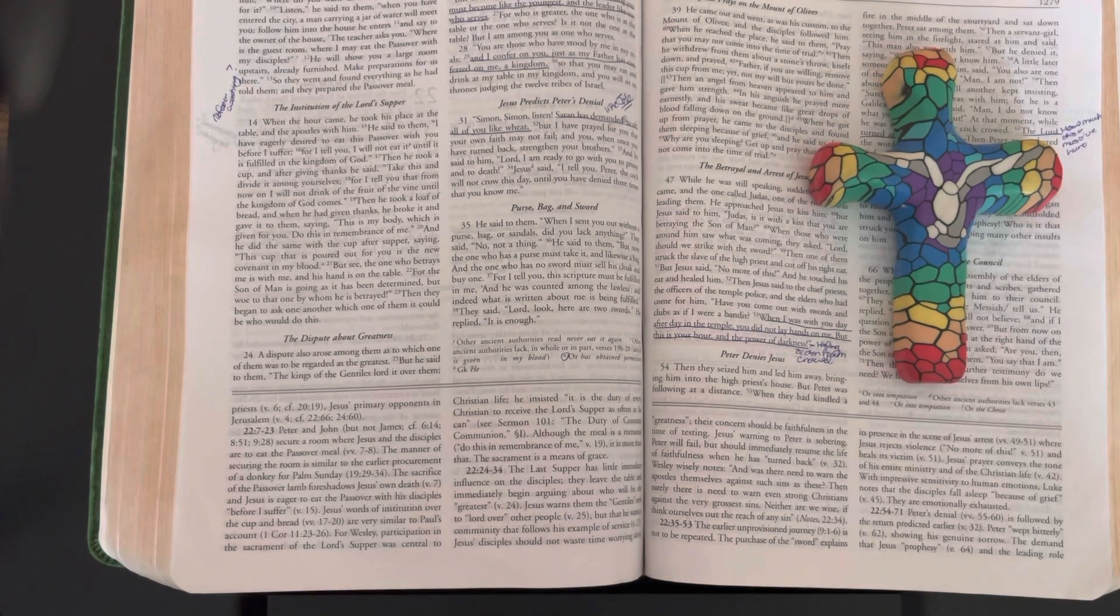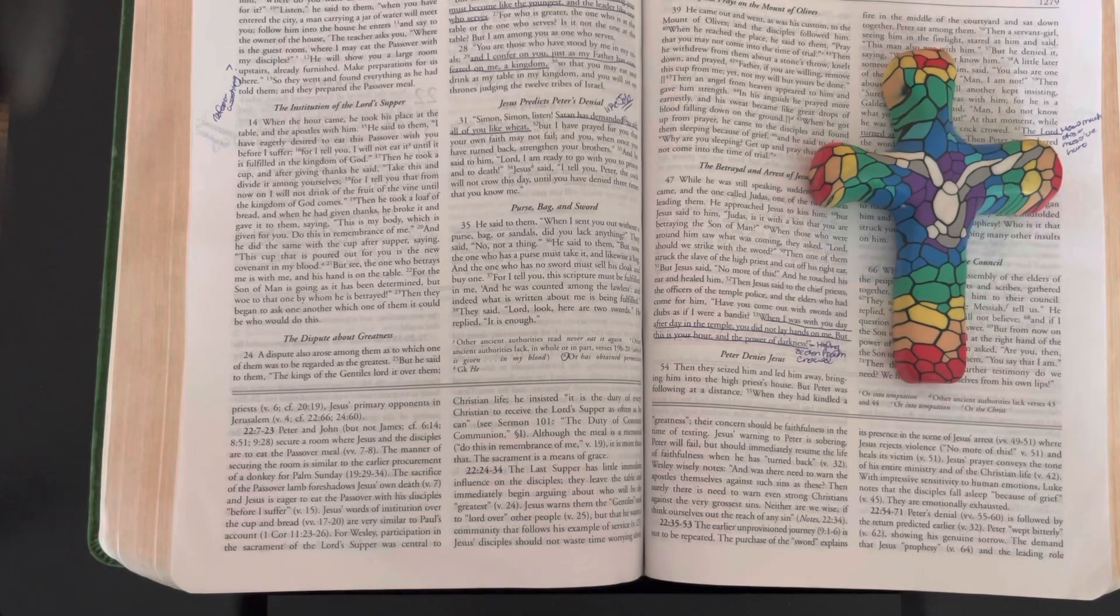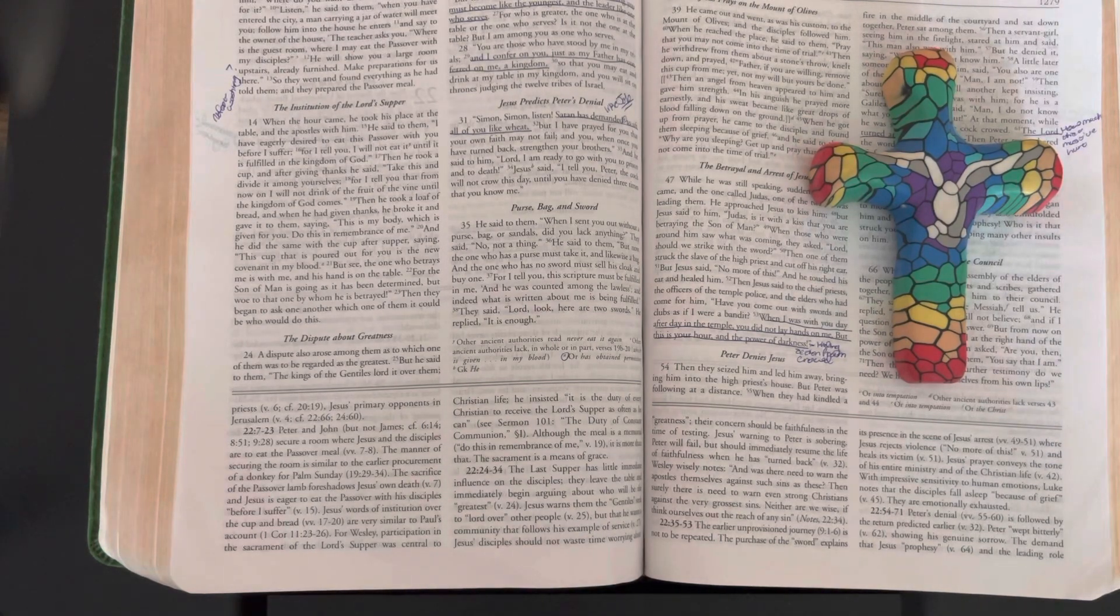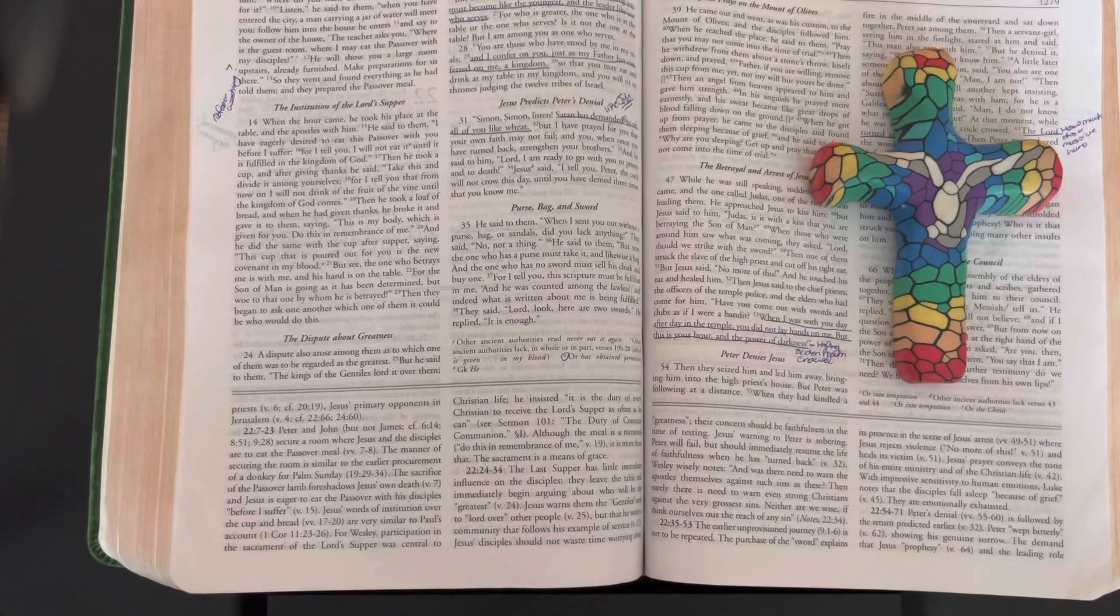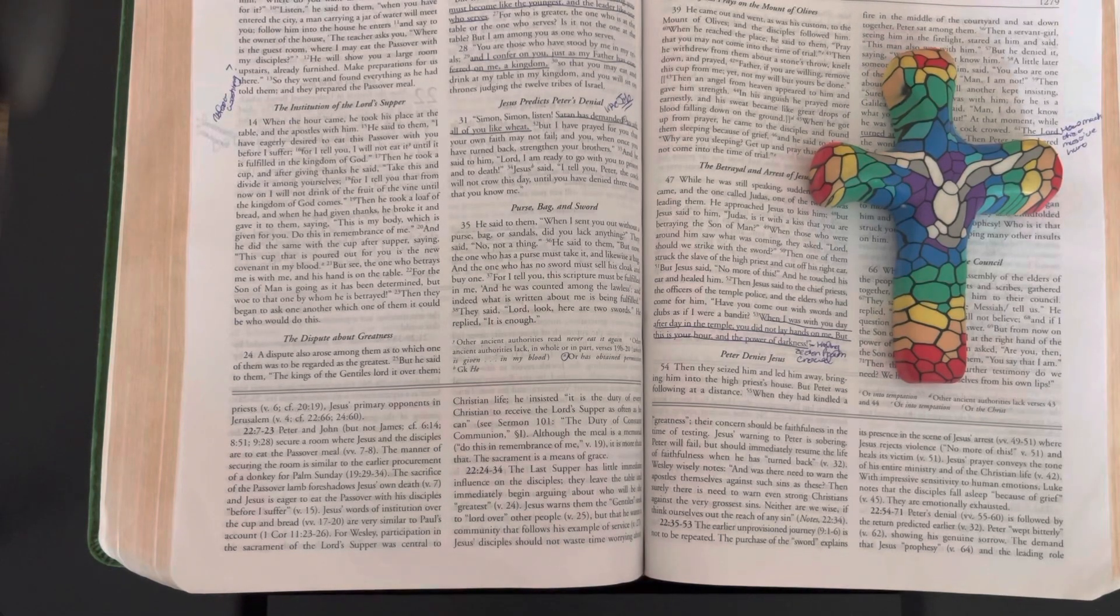"But see, the one who betrays me is with me and his hand is on the table, for the Son of Man is going as it had been determined. But woe to that one by whom he is betrayed." Then they began to ask one another which one of them it could be who would do this.